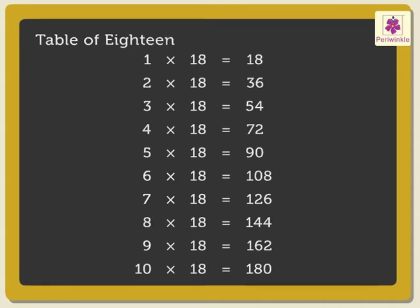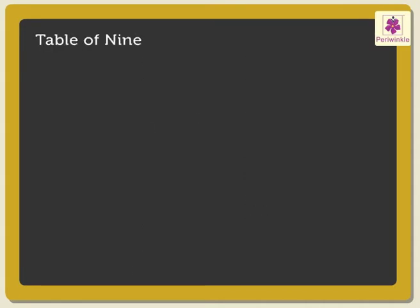Next is the table of Nineteen: 1 × 19 is 19, 2 × 19 are 38, 3 × 19 are 57.